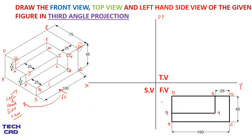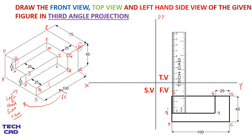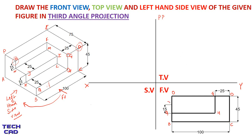After that, make the JI line. I take the scale and mark 15 mm from Q to get point J. From point J I make a line towards GH which gives me point I. This completes my front view of the figure.